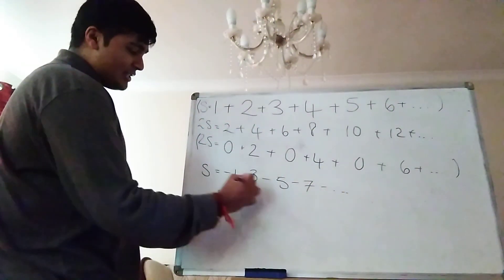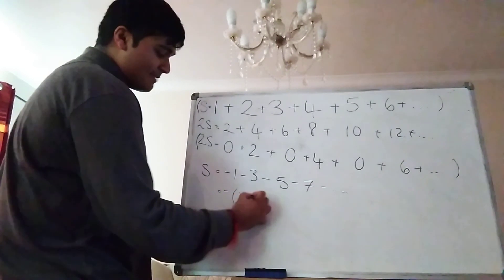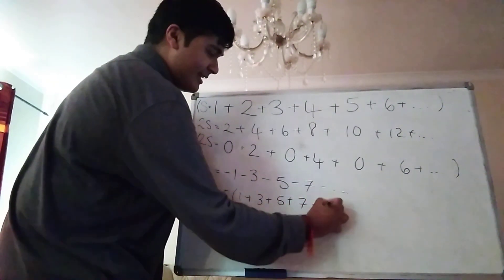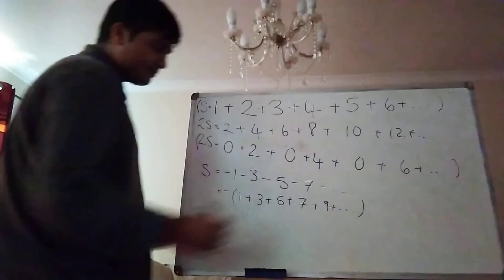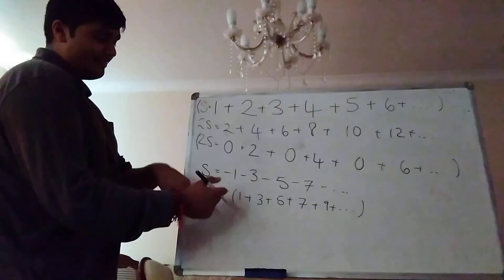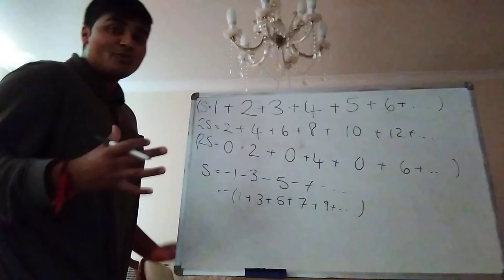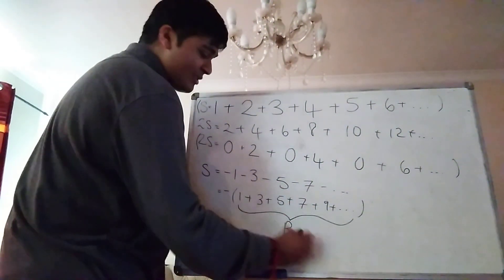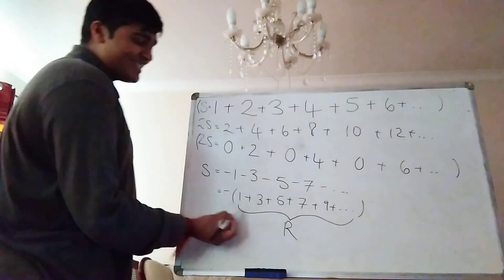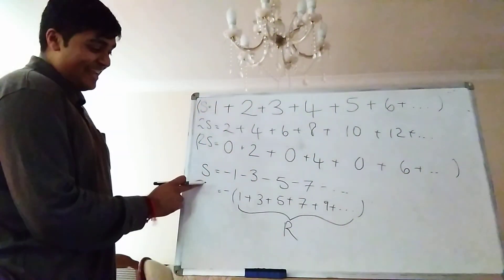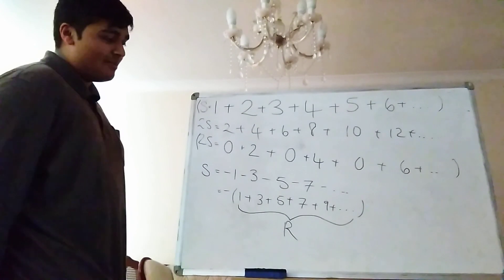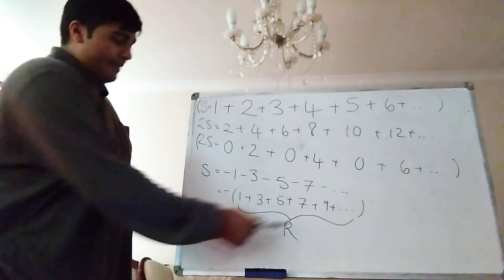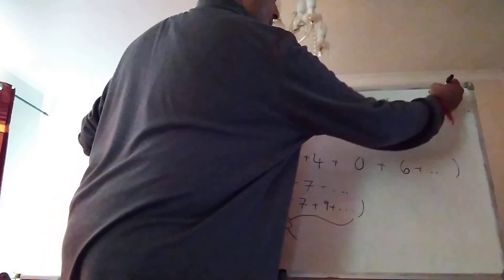Well I can actually take out a factor of minus 1 from this. So I can write this as minus 1 plus 3 plus 5 plus 7 plus 9 plus so on. So S is equal to the negative of the sum of all the positive odd numbers. Which in itself is quite remarkable. But we're not done yet. Let's call this sum here R. So we've shown that S equals minus R. So R is just the sum of the positive odd numbers. So we've got S equals minus R. I'm just going to write that up here.